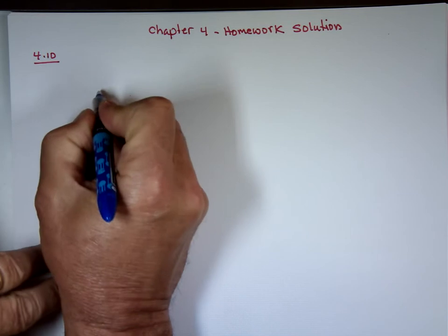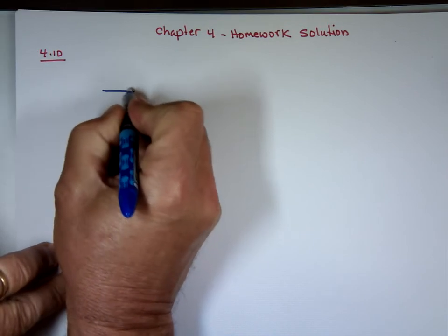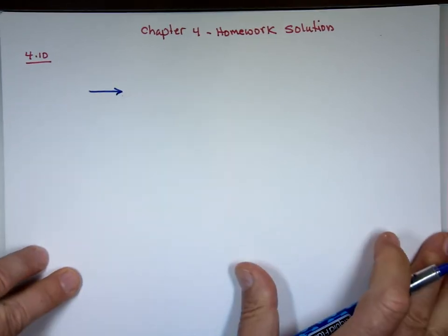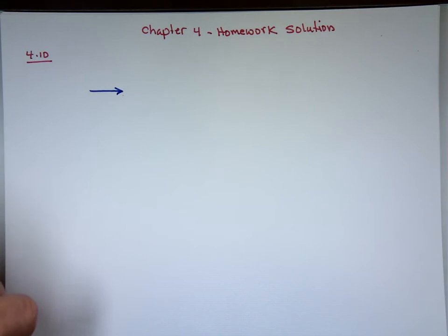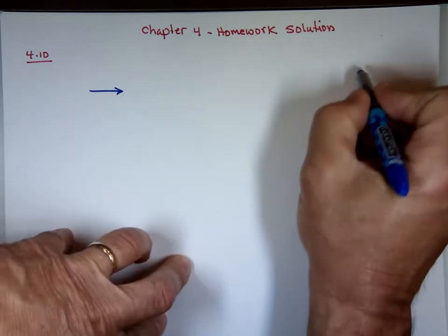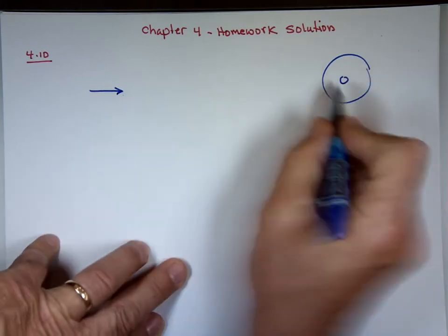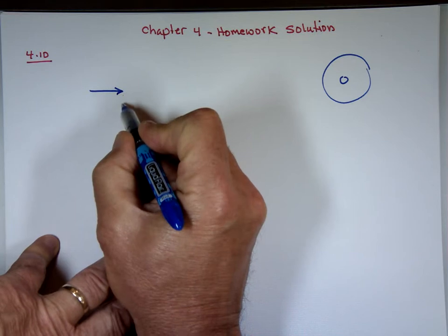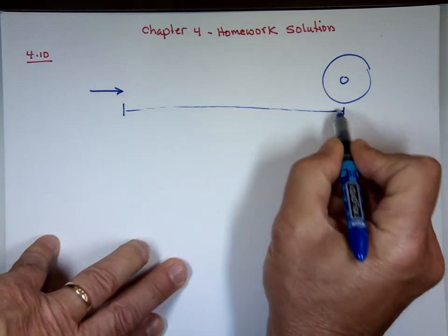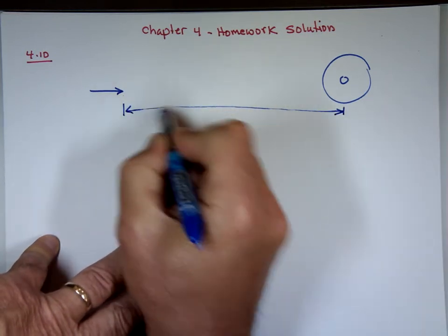An archer shoots an arrow horizontally — horizontally meaning in the x-direction — at a target 15 meters away. There's a target with a bullseye, and the distance from the archer to the center of the bullseye is 15 meters.